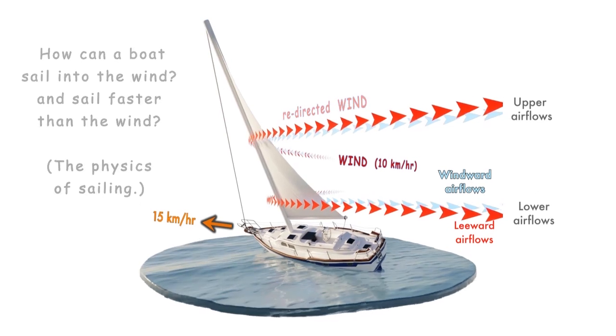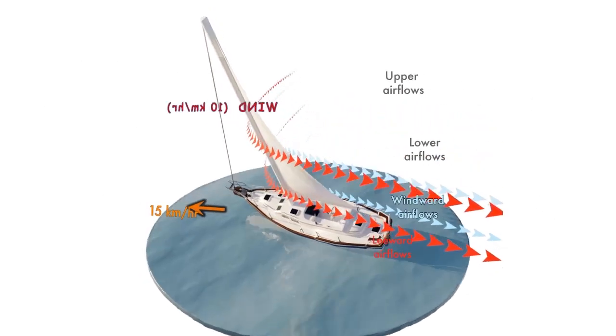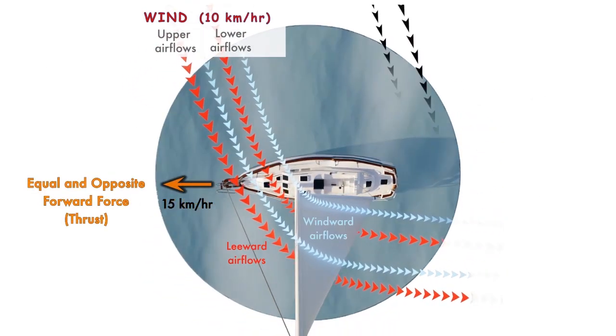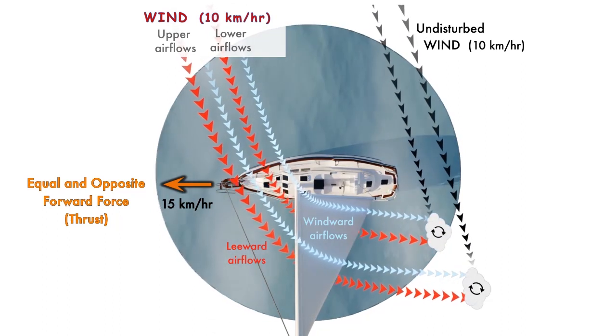In short, the explanation is that the sail steals momentum and energy from the wind to push the boat forwards. But how exactly?